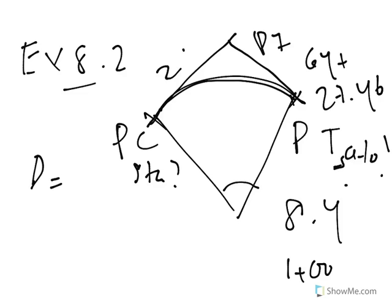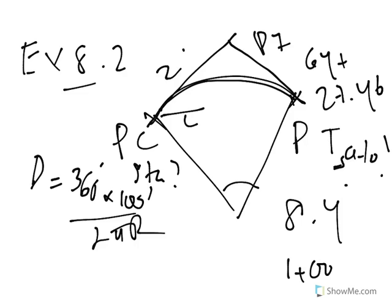So let's explain the next step. If we look at the equation, D is equal to 360 divided by 2. Now if we look at the equation, let's see what this gives us.